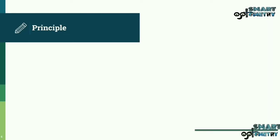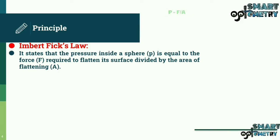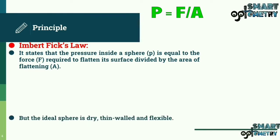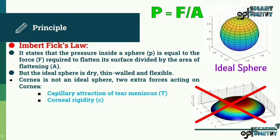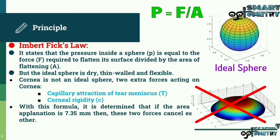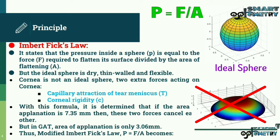Principle: the Goldman Applanation Tonometer is based on the Imbert-Fick law, which states that the pressure inside a sphere equals the force required to flatten its surface divided by the area of flattening — P = F/A. However, the cornea is not an ideal dry, thin-walled, flexible sphere. Two extra forces act on the cornea: capillary attraction of the tear meniscus and corneal rigidity. It is determined that if the area of applanation is 7.35 mm, these two forces cancel each other. But in the GAT, the area of applanation is only 3.06 mm, so the modified formula becomes P = (F + T − C) / A.